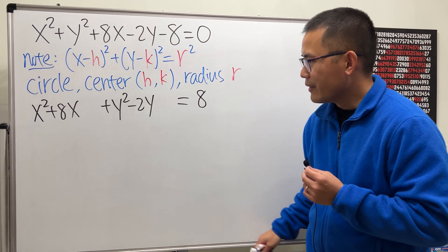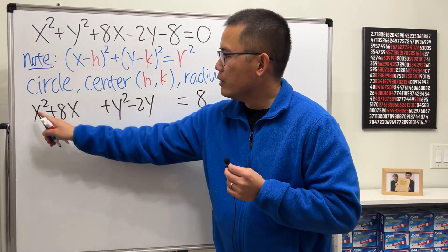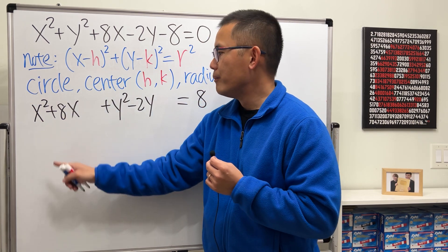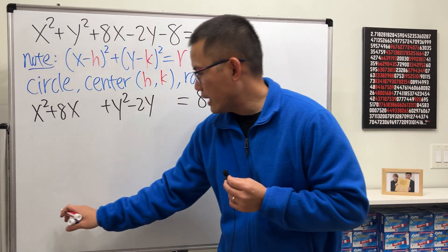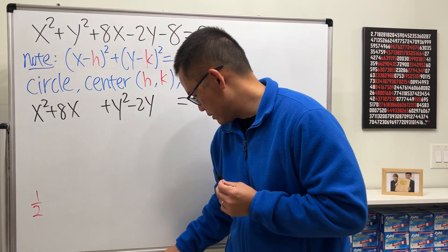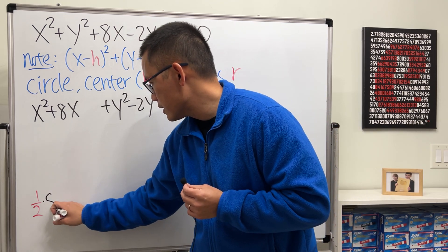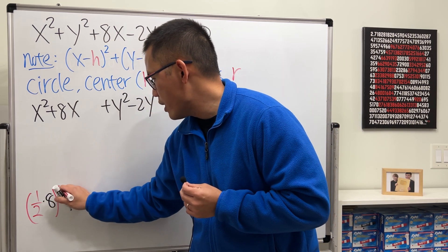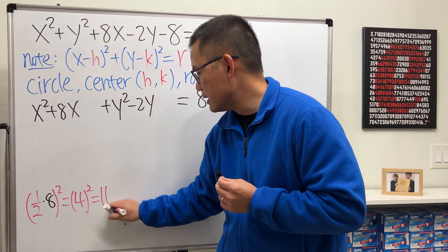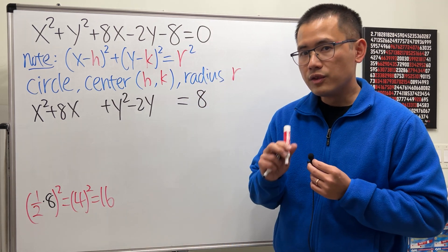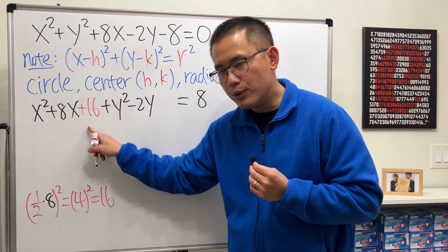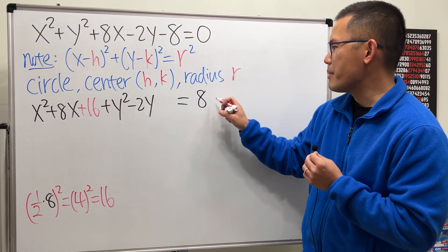Now, to complete the square right here, first we have 1 in front of the x² already, which is good. Proceed by looking at the 8. We take half of it, which is 1/2 times 8, which is 4. And then, square that little result, which is just 4², and that will give us 16. So that means, we will have to add 16 here. And whatever you do to one side of the equation, you do the same thing to the other side.